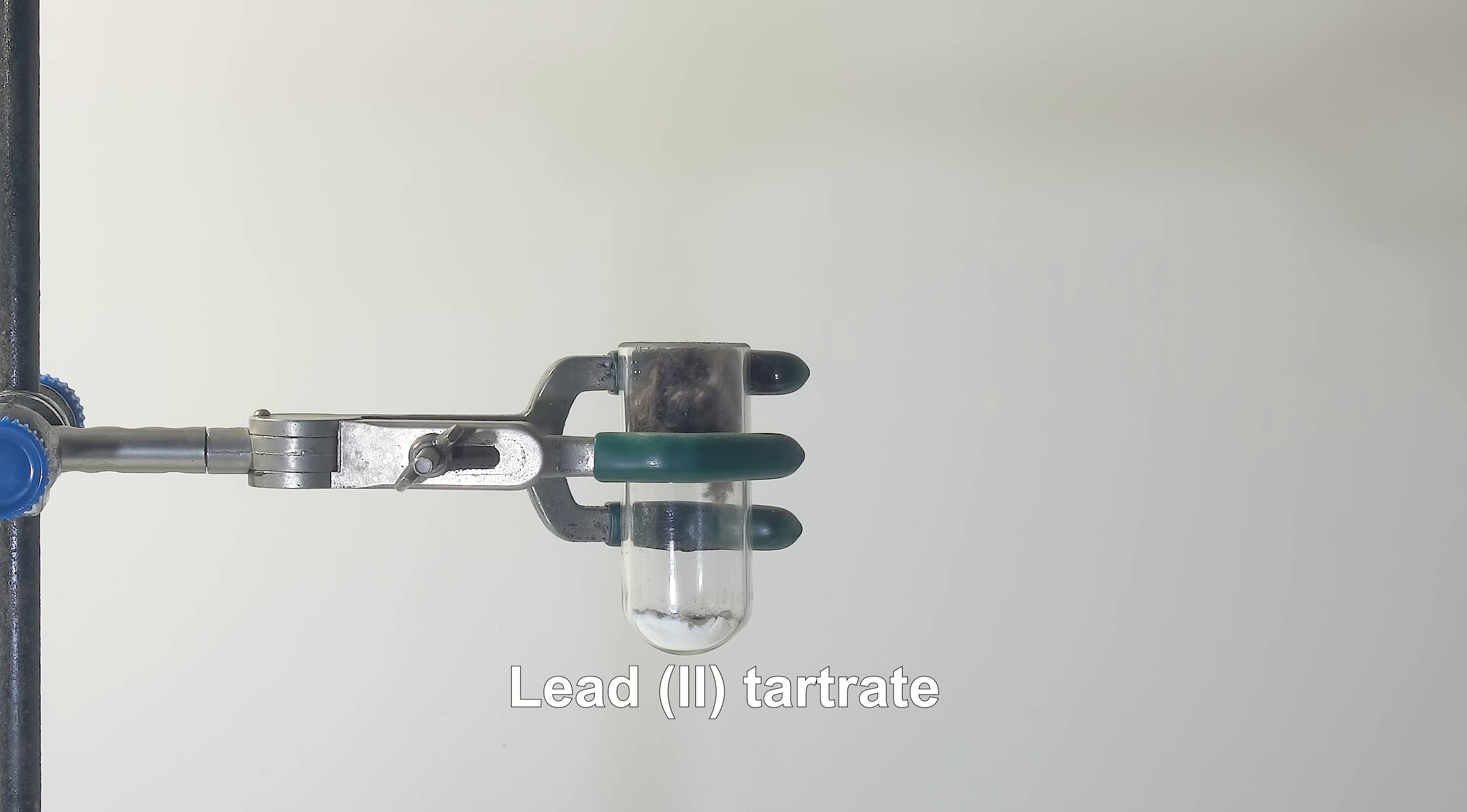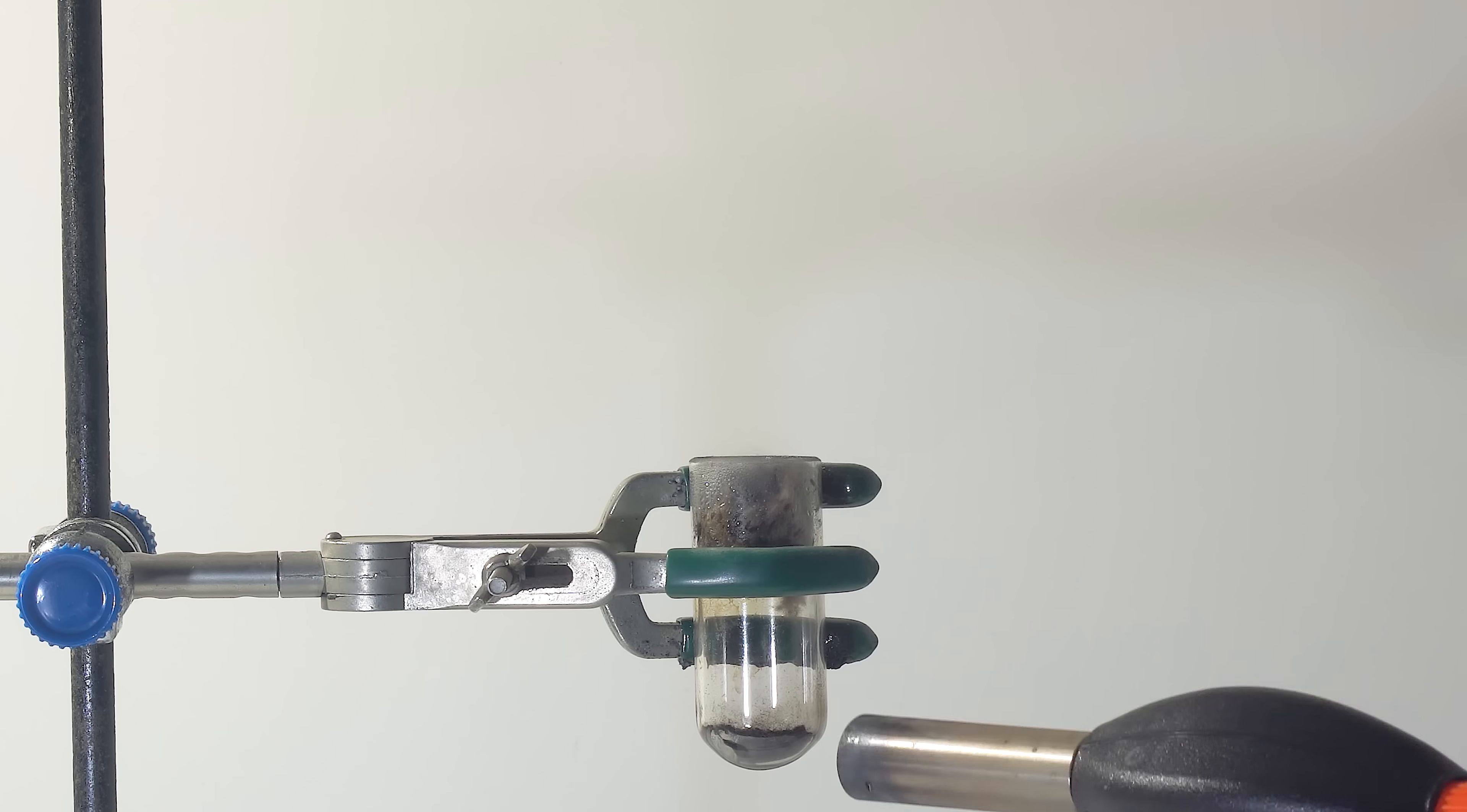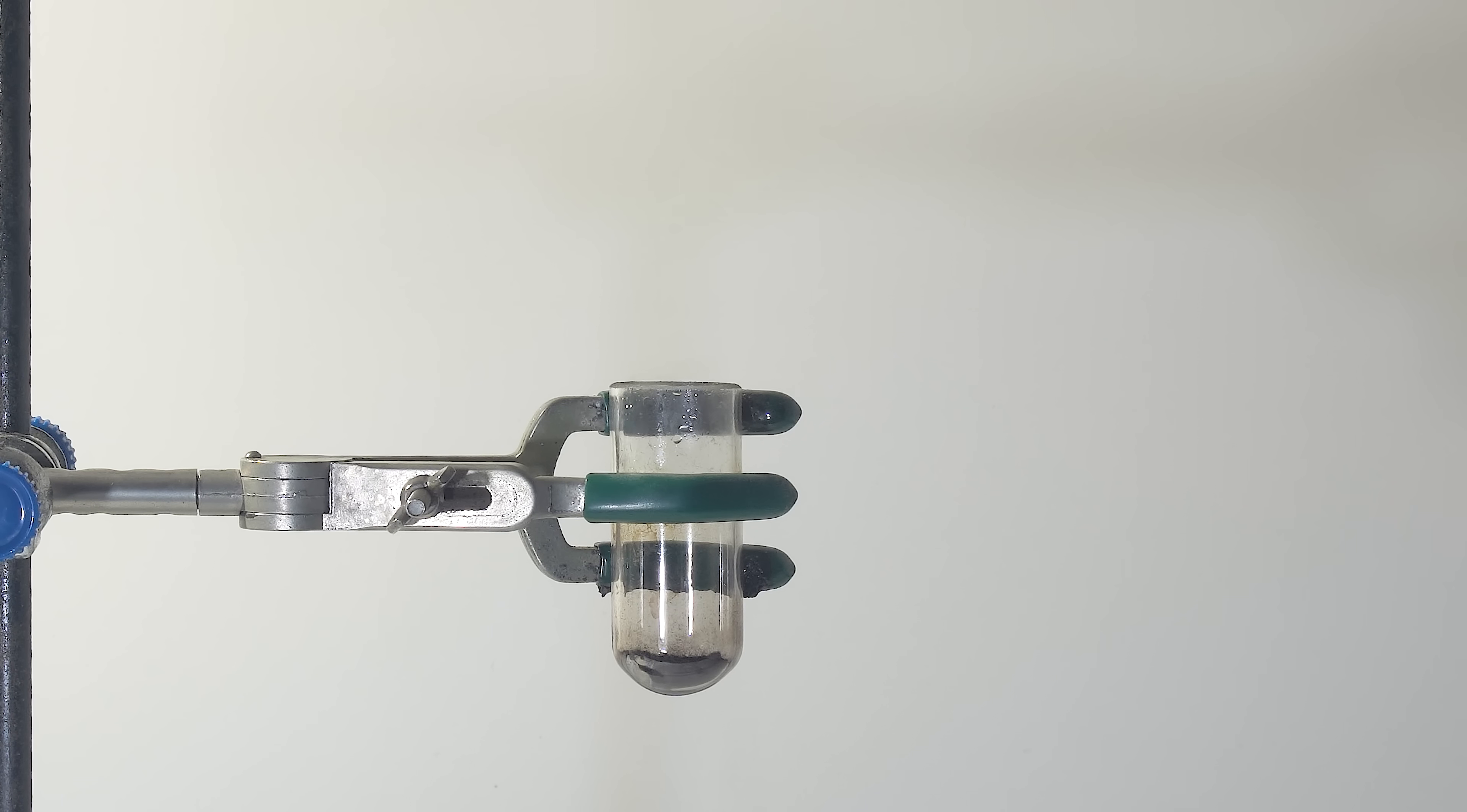Now, let's carry out the reaction in reverse. In a wide test tube sealed with cotton wool, I'll decompose lead tartrate by heating. After this, I'll remove the cotton wool and add liquid oxygen to react with pyrophoric lead.